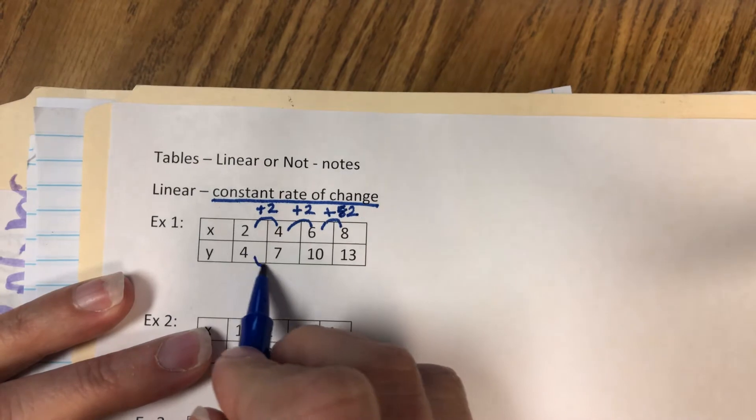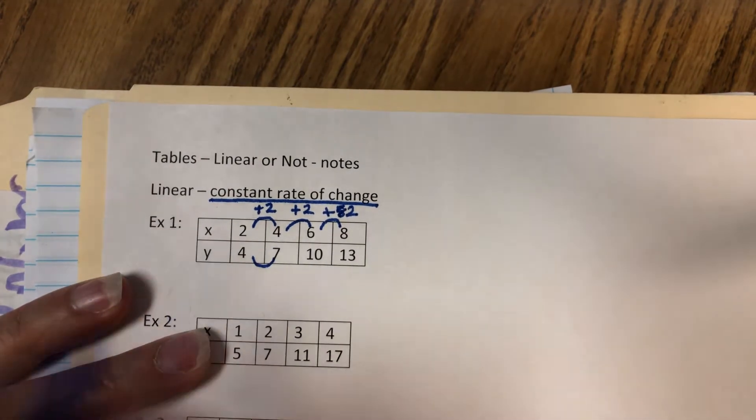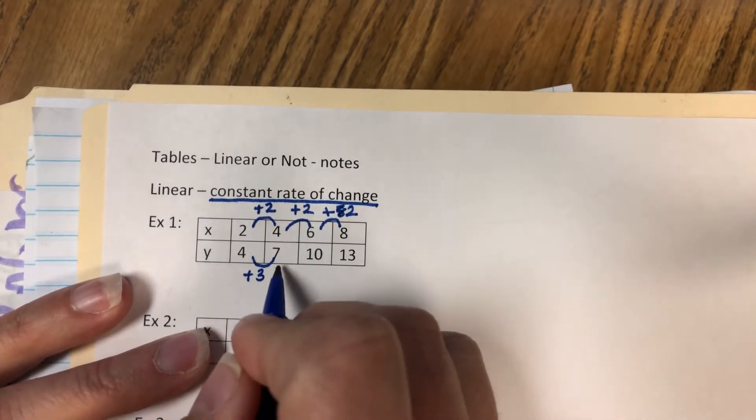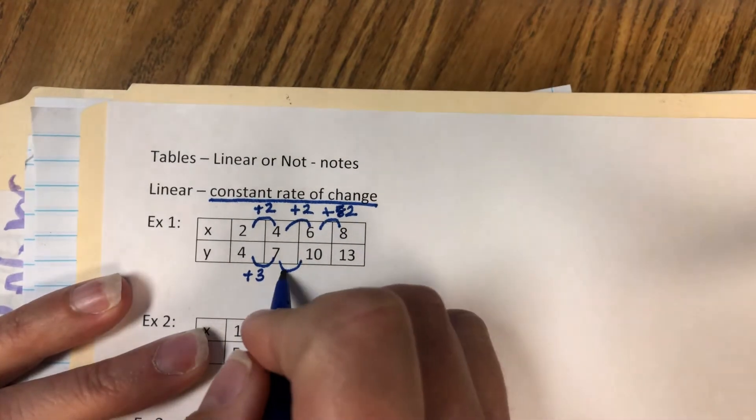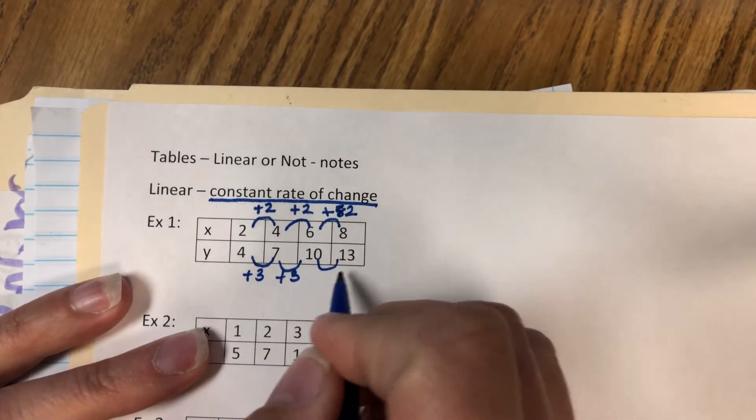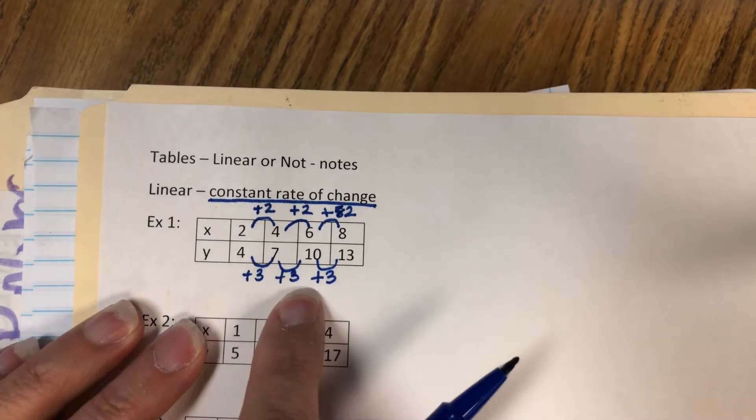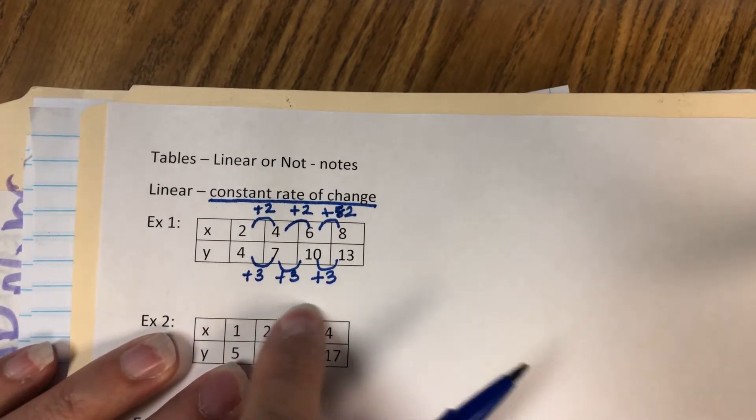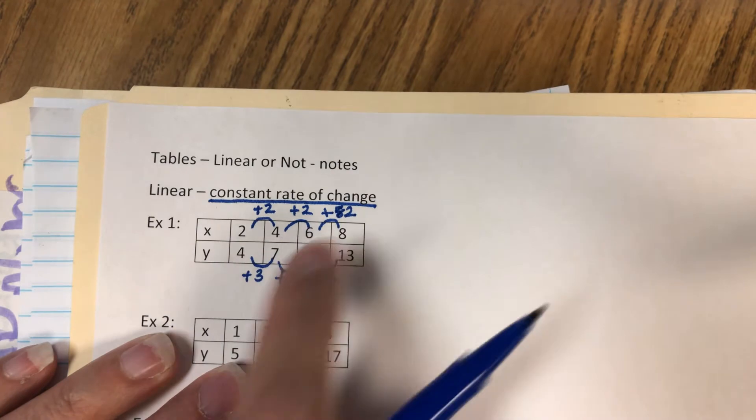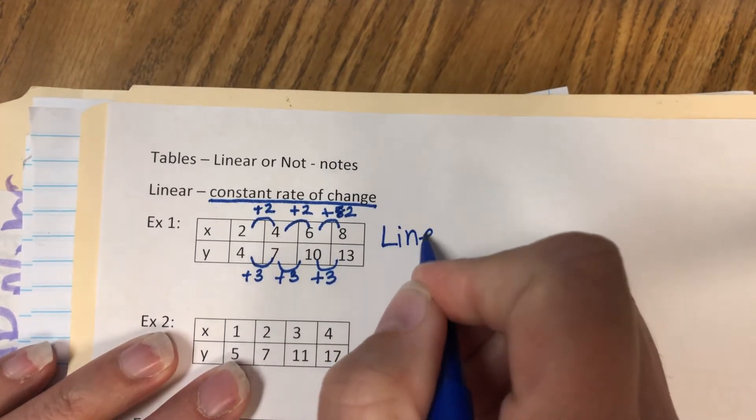Then let's look at the y's. What do you do to 4 to get to 7? You add 3. What do you do to 7 to get to 10? You add 3. What do you do to 10 to get to 13? You add 3. Because these are constant—constant means the same—plus 3, plus 3, plus 3, and plus 2, plus 2, plus 2, that means it is a linear function.